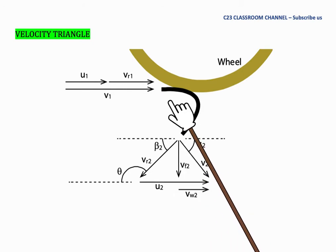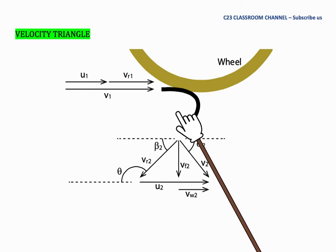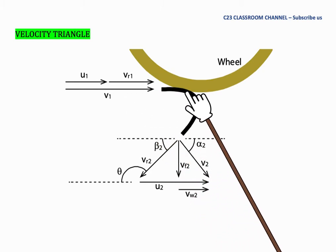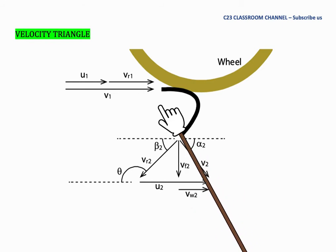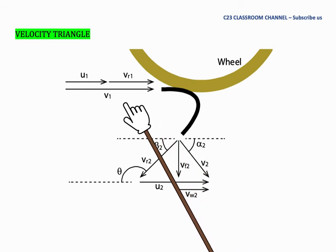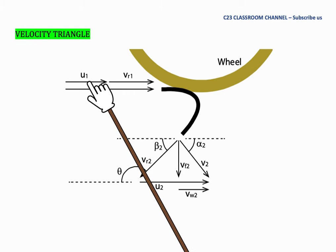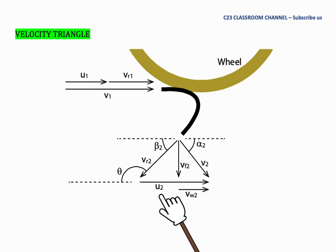One important thing to know when discussing the velocity triangle for the Pelton Wheel is that the water jet hits one single point, and after hitting the bucket the water immediately falls down. Therefore, we assume that the tangential velocity is equal at inlet and outlet. In the velocity triangle for the Pelton Wheel, we only have one value of tangential velocity, U.